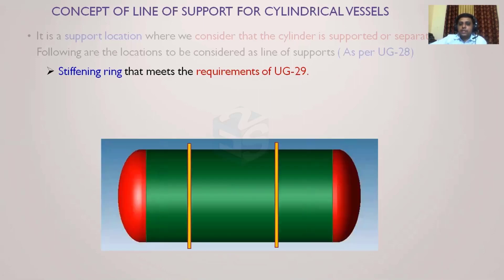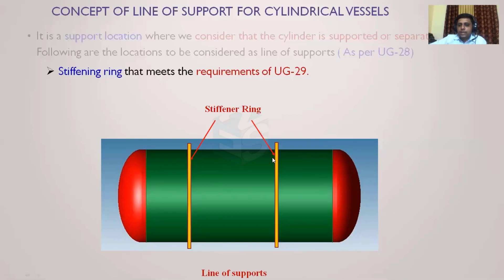When stiffener rings are present, they behave as lines of support, and we no longer consider the entire vessel length. Instead, we break the cylinder into parts and analyze each section with its individual length from one line of support to the next. For example, the length from the stiffener centerline to the H/3 point from the tan line is used for one section, stiffener-to-stiffener length for the middle section, and similarly on the other side.